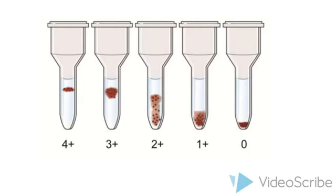3+ indicates medium-sized clumps of agglutinated cells in the upper half of the gel column. 2+ indicates small or medium-sized clumps of agglutinated cells throughout the gel column. A few unagglutinated cells may be visible at the bottom of the gel column.